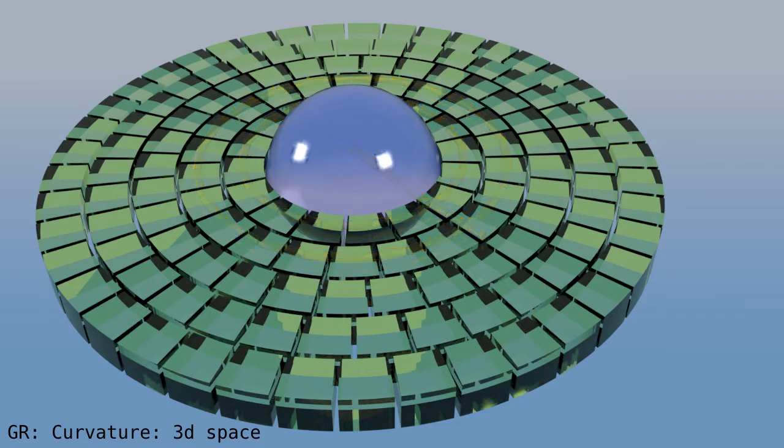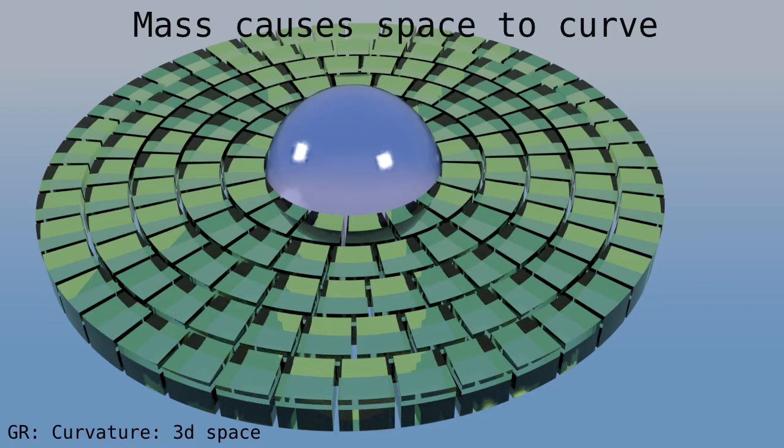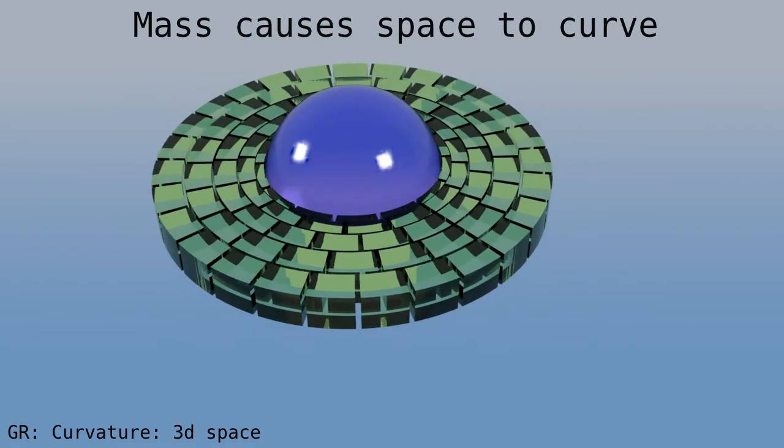But next we're going to increase the density of the sphere, almost up to the point where it becomes a black hole. In general relativity, mass causes space to curve. So pay attention to the voxels, especially the innermost rings. As you can see, the voxels shrink, but only in the direction of the radius.